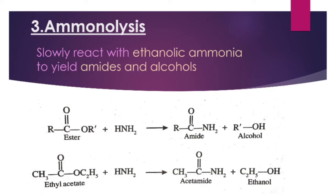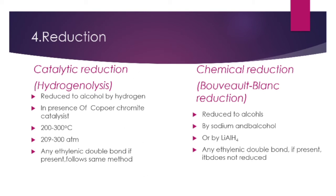The next reaction is aminolysis. Esters slowly react with ethanolic ammonia to yield amides and alcohols. For example, ethyl acetate slowly reacts with ethanolic ammonia to yield acetamide and ethanol.